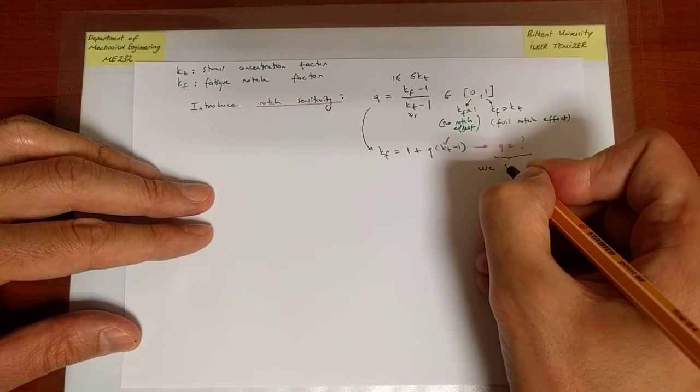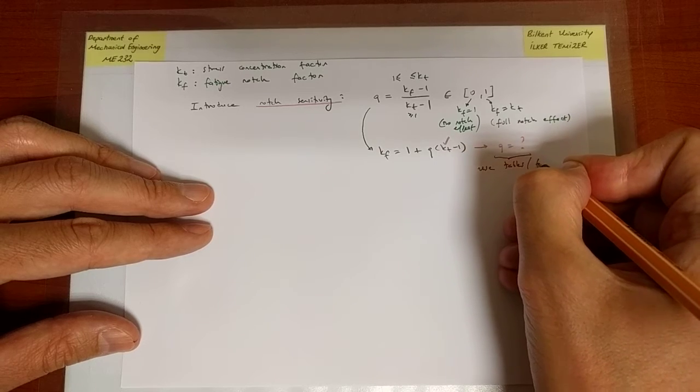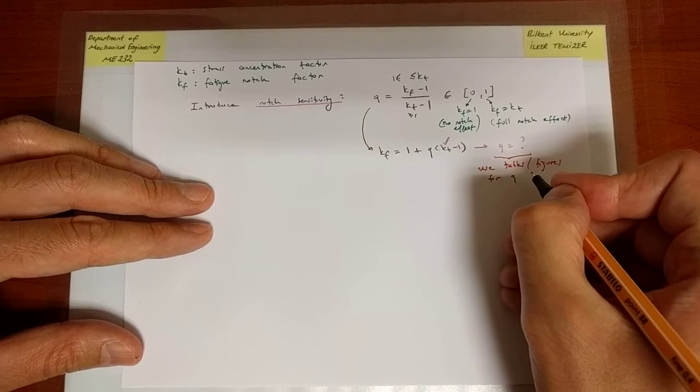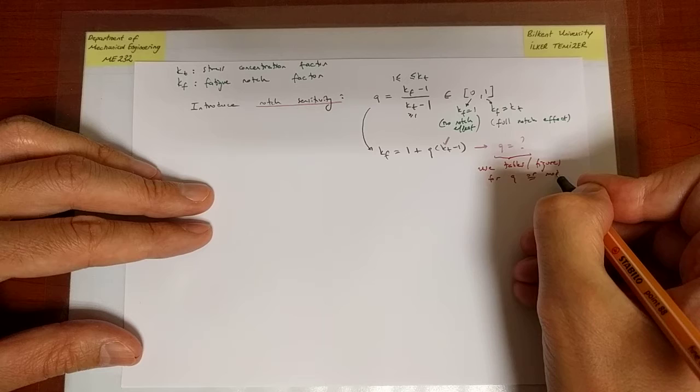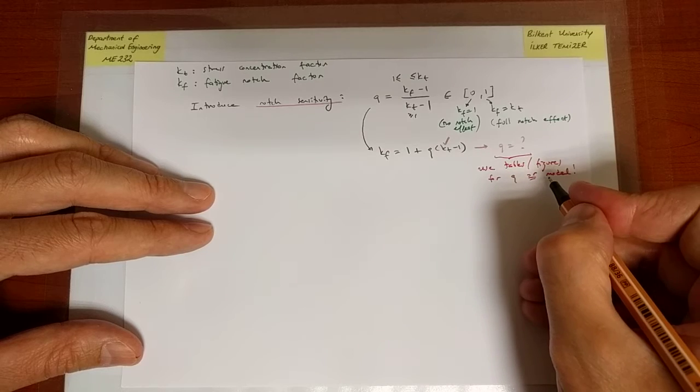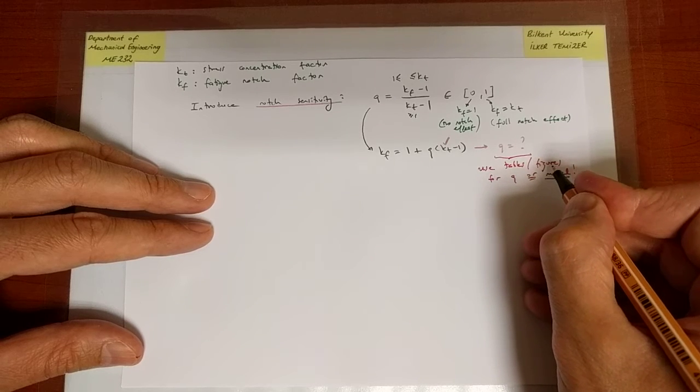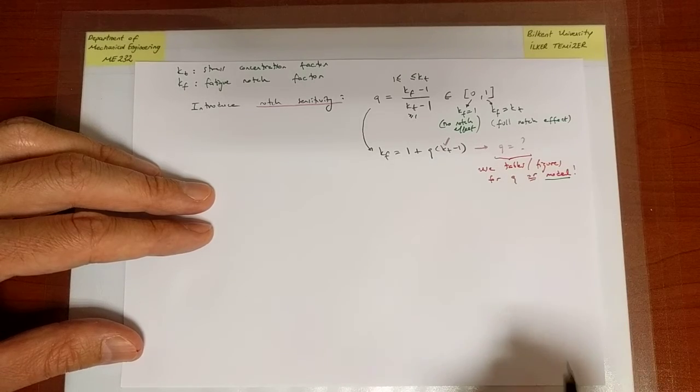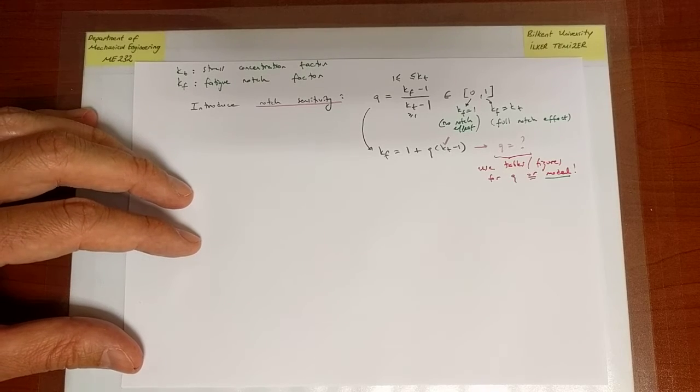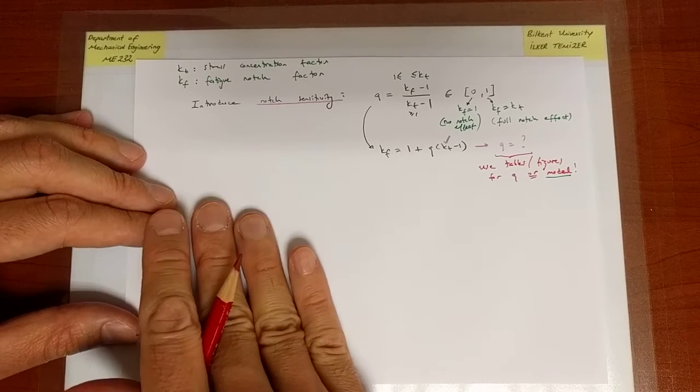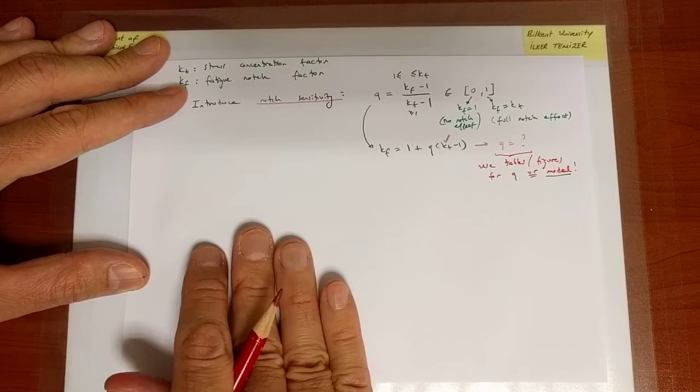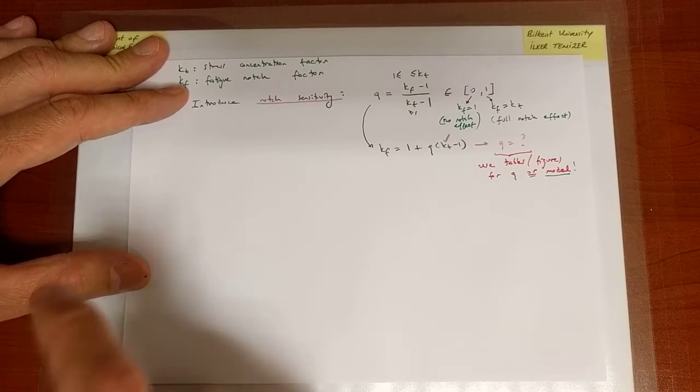In other words, we can use tabulated values. We can use plots that make use of the data for Q, or we can model it. In other words, we can take the figures and take those points and do a least square fit to some equation that represents the variation of Q by correctly identifying what Q depends on. And it turns out that there are two popular equations for two sets of popular metals, steel and aluminum.